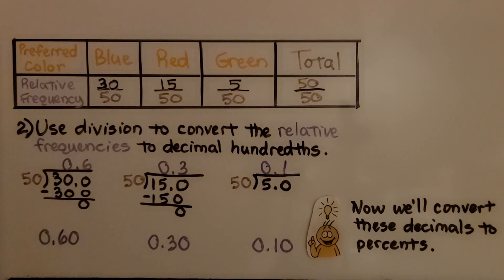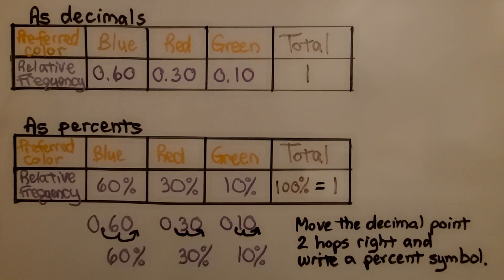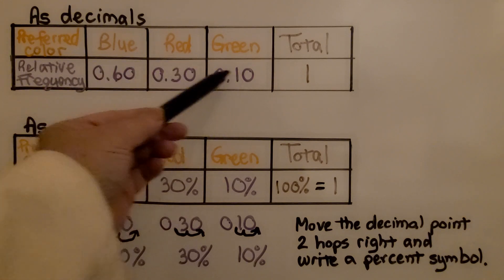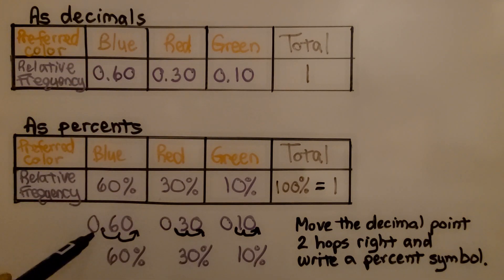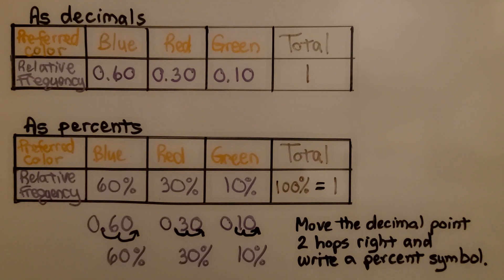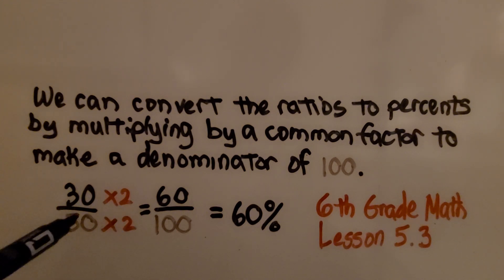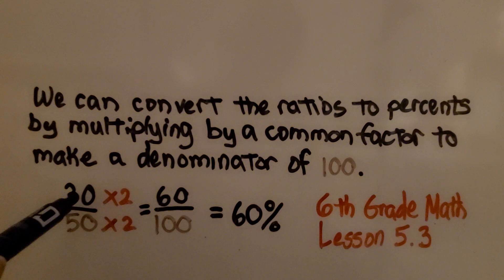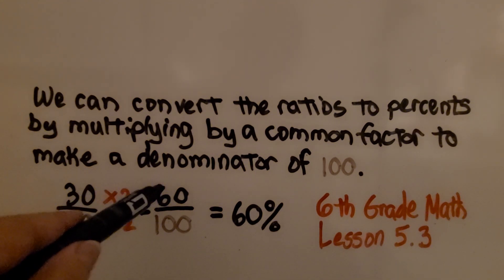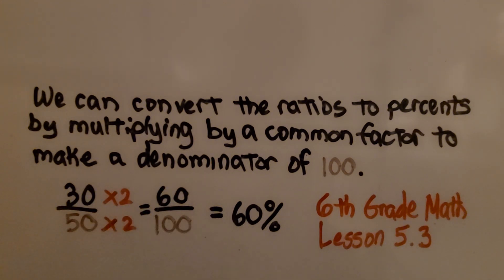Now we'll convert these decimals to percents. Here we have the data written in our relative frequency table as decimals, and here we have them written as percents. If we have 60 hundredths, we just move that decimal point over two hops to the right and put in a percentage symbol. Another quick way is to convert the ratios to percents by multiplying by a common factor to make the denominator 100. So for 30 fiftieths, 50 needs to be multiplied by 2 to be 100, so we multiply the 30 by 2 — that gives us 60, and 60 one-hundredths is 60%. We covered that back in sixth grade math lesson 5.3, and I can put a link in the description if you're a little rusty on that.